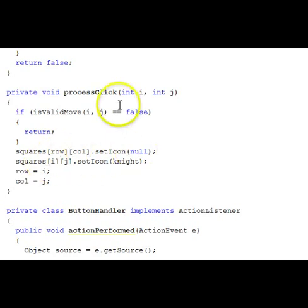And then the new cell, where the knight is going to move, we set the icon to the knight icon, and update our row and column position indicators to be the i and j.